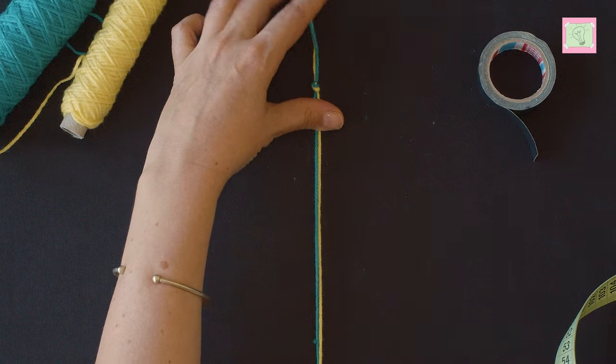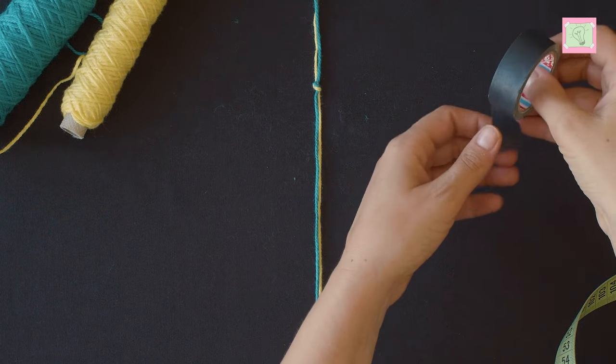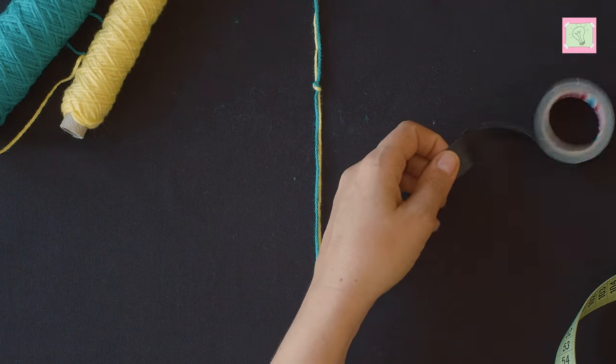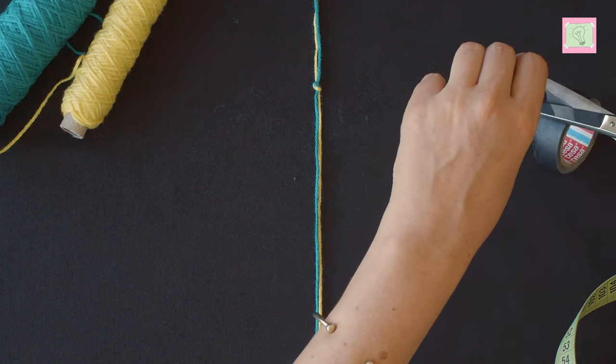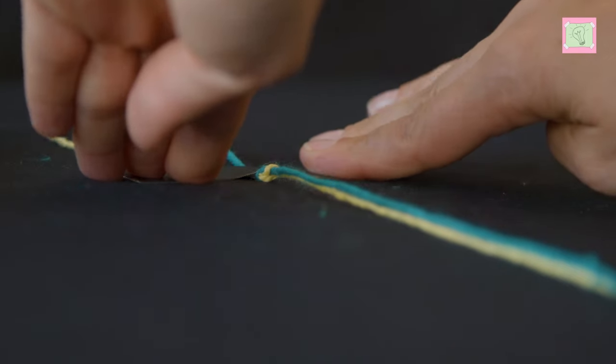Then stick your threads on the table at the height of the knot you just made. Remember which is your right thread and which is your left one. I stick them on the table like this so I don't forget.